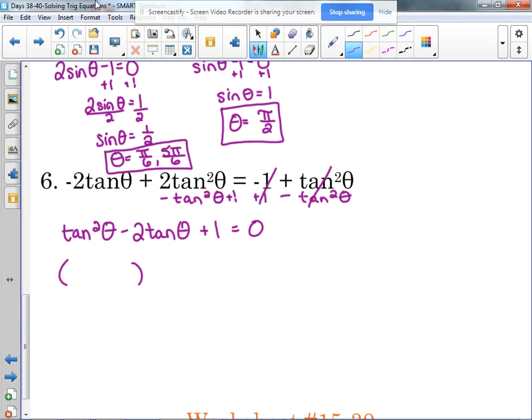Three terms, there's not a GCF, so we've got to go to two sets of parentheses. Tangent of theta times tangent of theta is tangent squared. One times one is one. There's a negative in the middle, so both of those are minus. So in this case, we end up, this was a perfect square trinomial, and we end up with the same factor twice. You don't have to solve it twice. If it's exactly the same, you only need to solve it once.